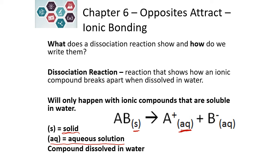Please note that when we're writing dissociation reactions, the elements need to be balanced on either side of the chemical reaction, as well as the charges. On the reactant side of the chemical reaction, you'll notice that there is no charge written, which means that when our ions form, the positive charges and the negative charges need to be equal to each other.